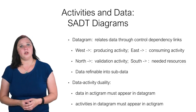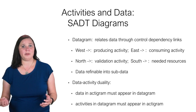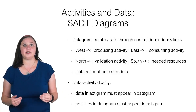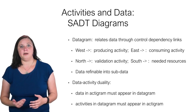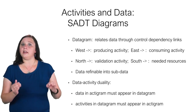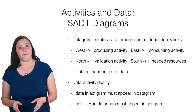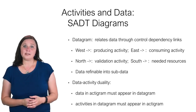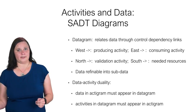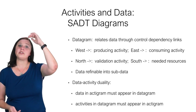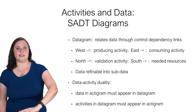Datagrams are very closely related to actigrams. They declare system data by their producing and consuming activities and interconnect those activities through controlled dependency links. Data in an actigram must appear in a datagram; similarly, activities in the datagram must appear in the actigram. In a datagram, the west is the producing activity, the east is the consuming activity, the north shows the validation activity, and the south is the needed resources.